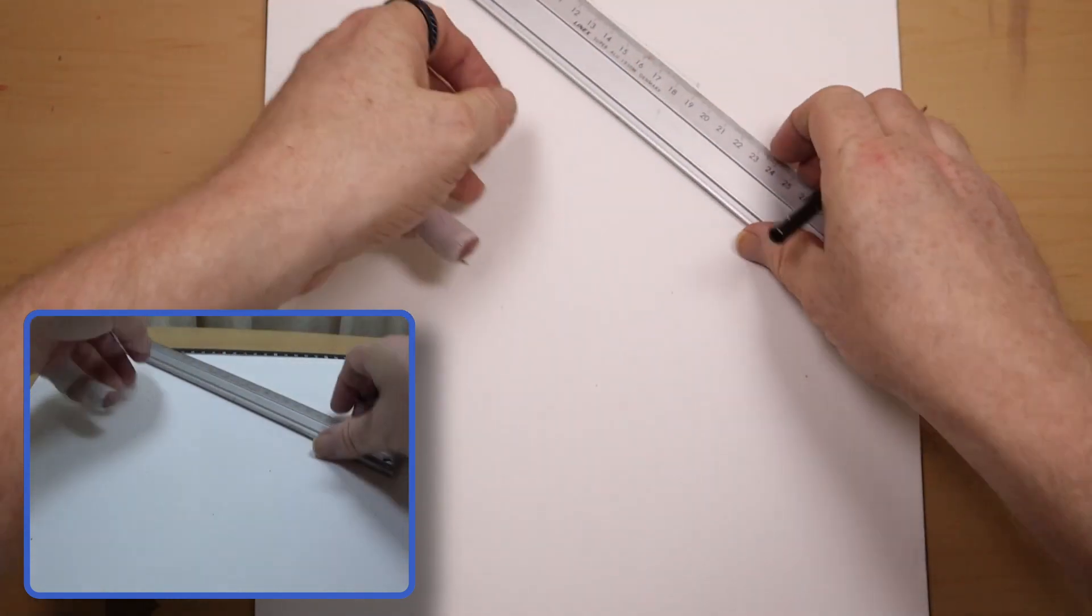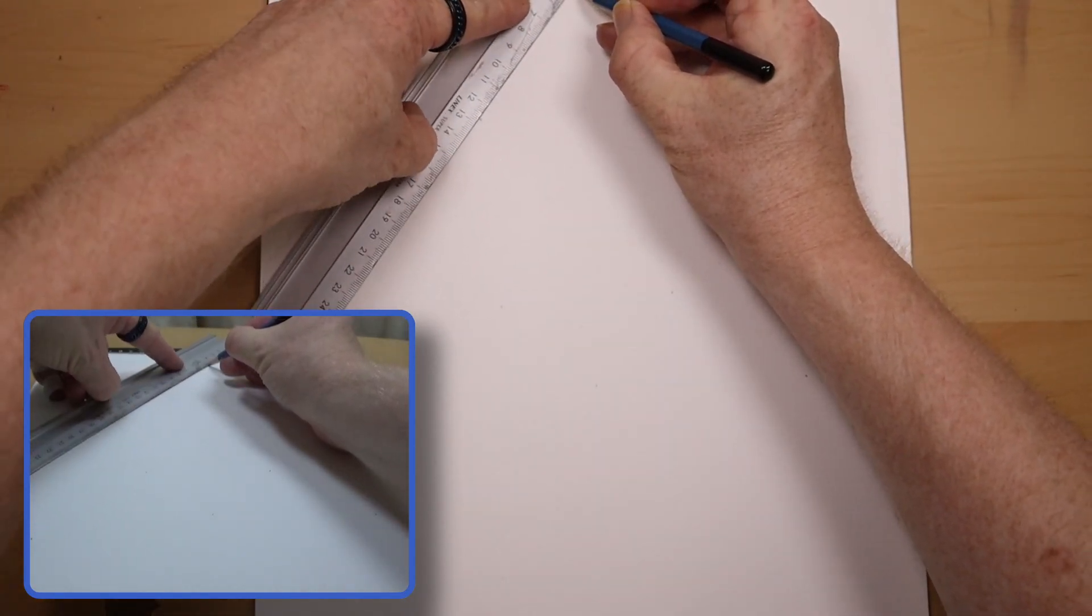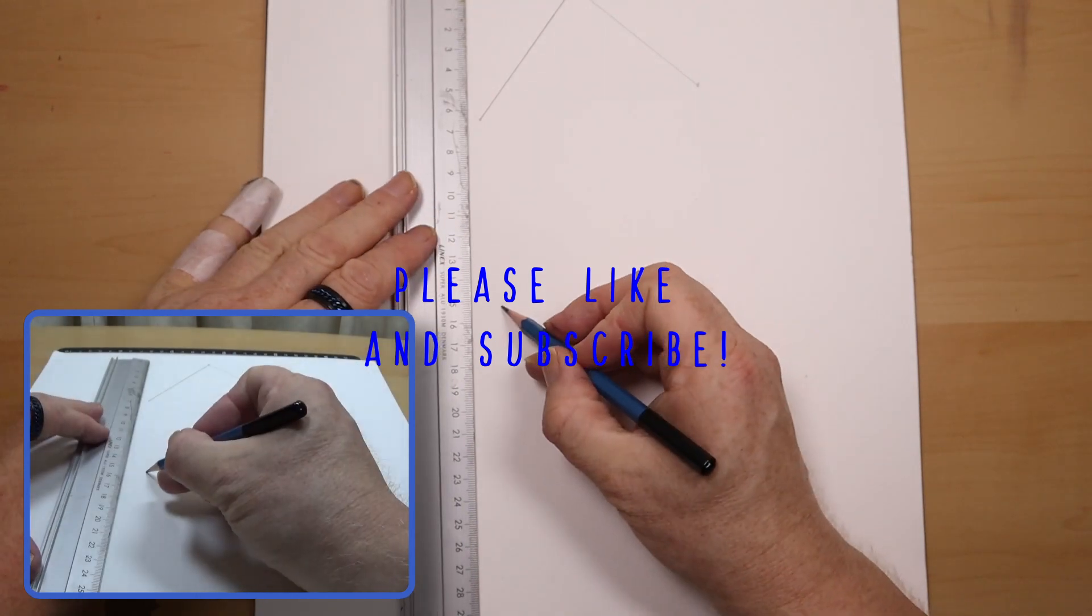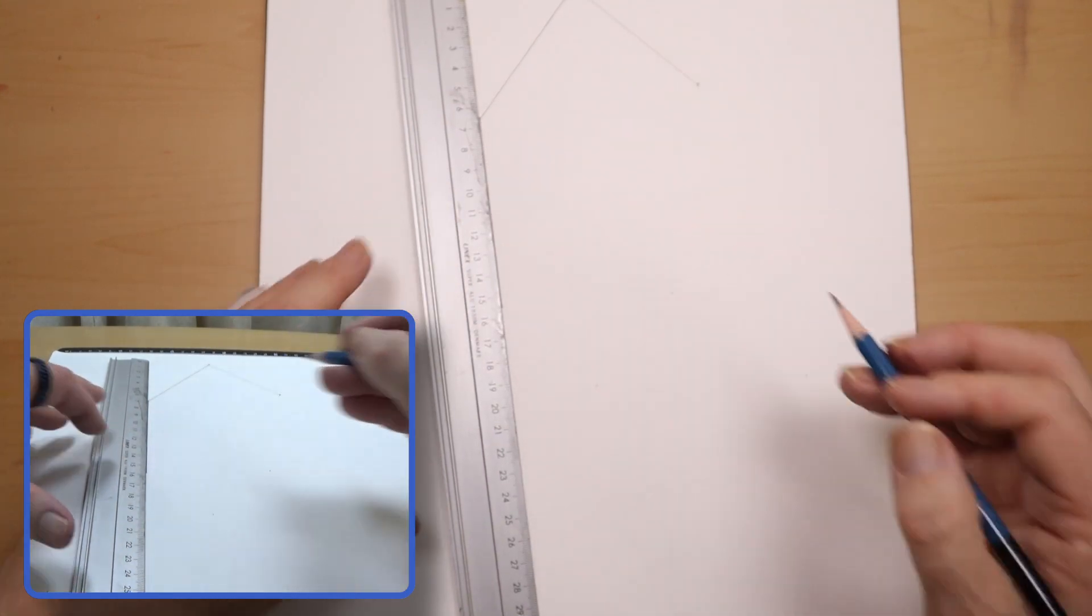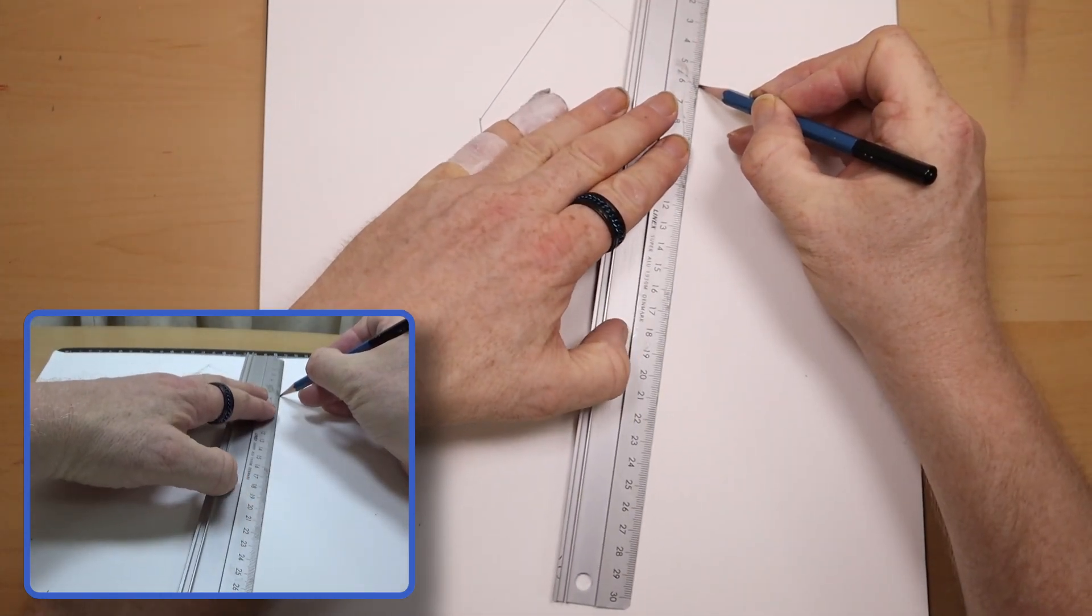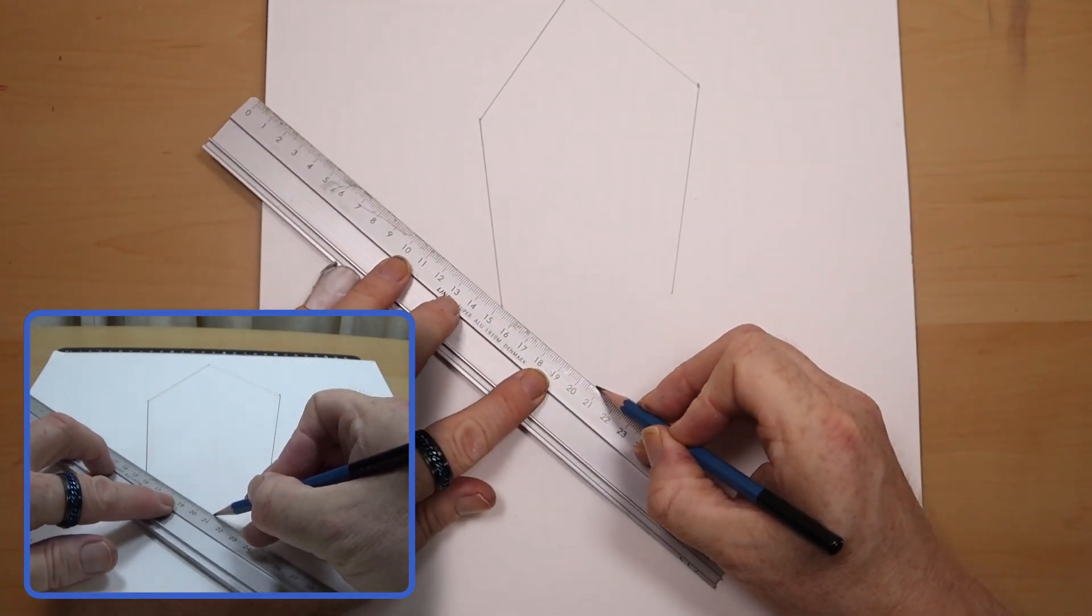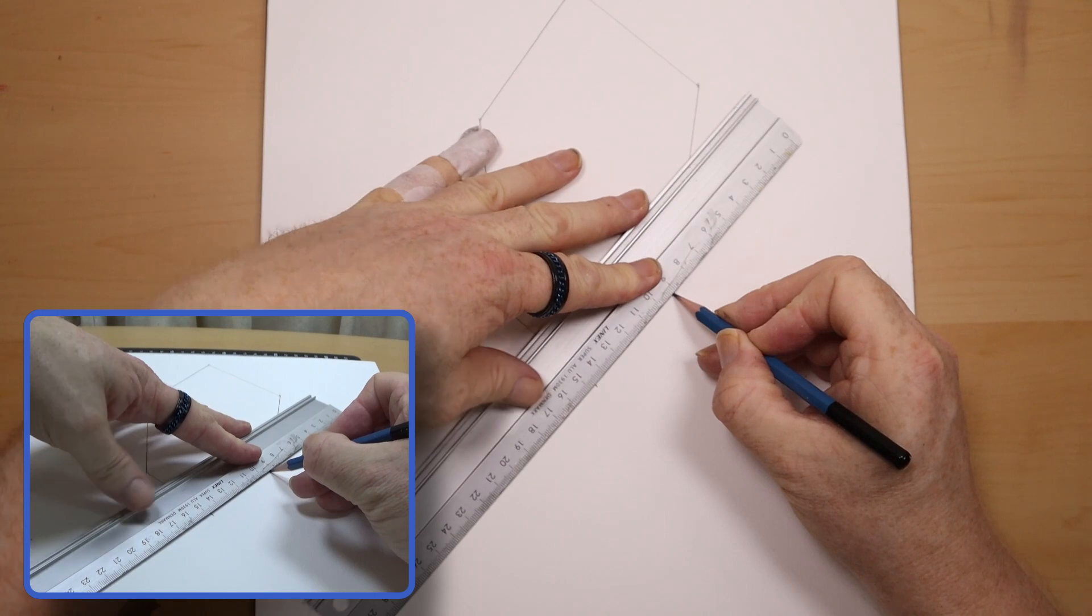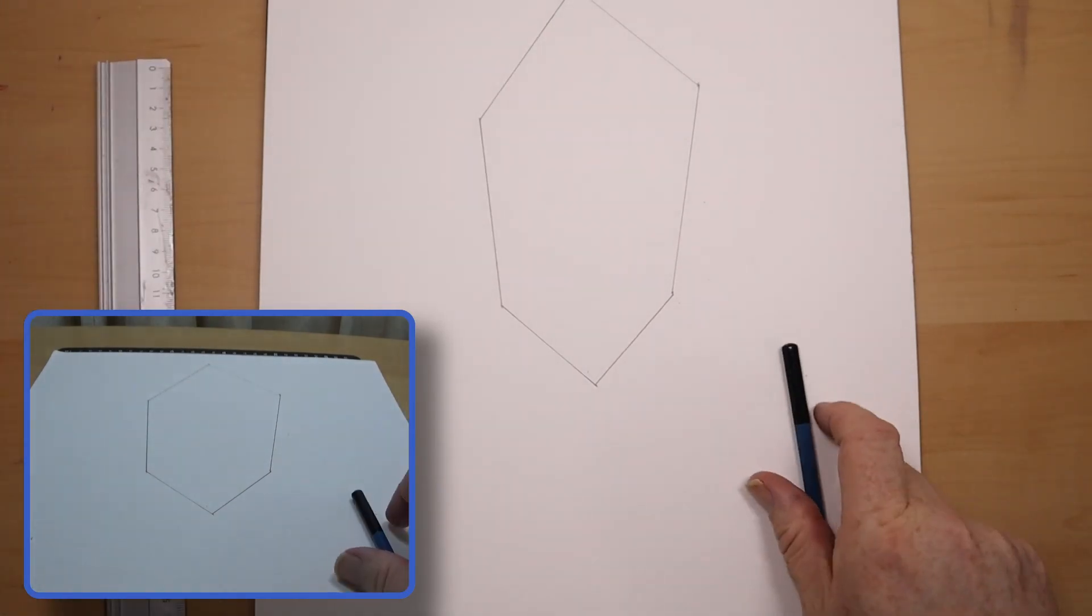We're going to join the dots and make ourselves a weird looking six-sided hexagon sort of shape, distorted. This is the outline of our cube. I'm drawing it a bit darker than I would normally because it's for YouTube and you need to see it. I'm pressing a bit harder than I would. That gives us our strange hexagon.